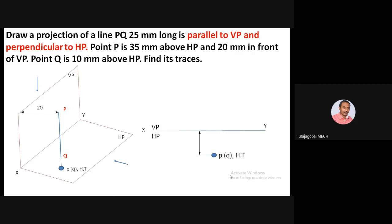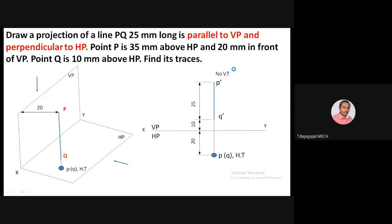From the top view, P is visible and Q is invisible. PQ is 20 mm in front of VP. In the front view, the total length is 25 mm, and point P is 35 mm above HP. There is no vertical trace because the line is parallel to VP — extending PQ, it remains parallel to the vertical plane, so no vertical trace can be obtained.